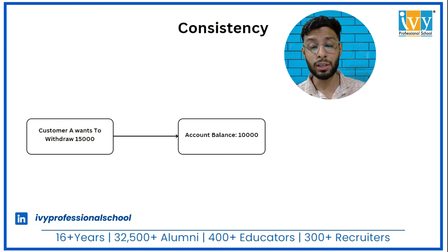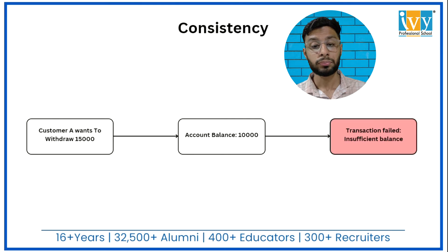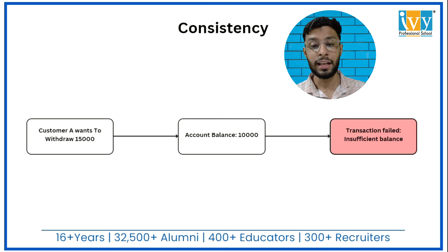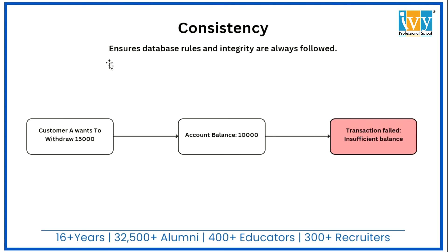For example, let's say Customer A wants to withdraw 15,000 but the account balance is only 10,000. The system will verify that the withdrawal amount exceeds the balance, and then the transaction fails due to insufficient balance. The database remains in a consistent state. Consistency ensures the database adheres to rules and no invalid data is written or left incomplete.